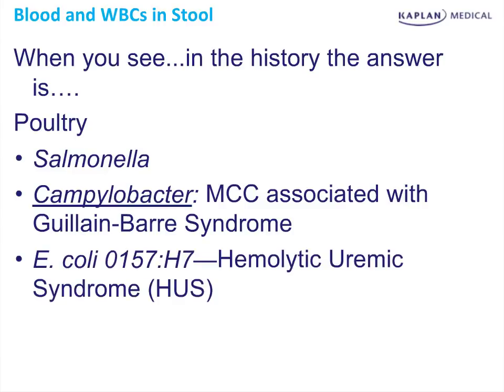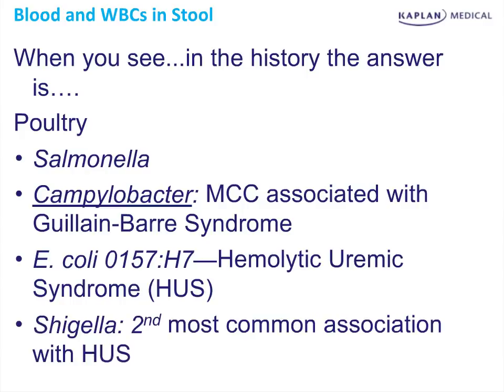E. coli O157:H7 — when you see hemolytic uremic syndrome, don't expect them to always say 'hemolytic uremic.' They'll probably describe it: fragmented cells, low platelets, and high BUN and creatinine. The answer is most likely hemolytic uremic syndrome. The second most common cause of HUS is Shigella — Shiga toxin does it too.